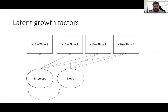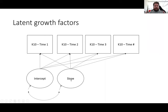In a latent growth model, the multiple dependent variables become indicators of two latent factors: the intercept, which is basically the score a person has when they start, and the slope, which represents how a person changes over time. These two can be correlated because where a person starts can affect how fast or slow they change. Each of these has a mean and a variance — the mean represents the average starting point or average change for the population, while the variance captures the fact that people differ in where they start and in how they change.